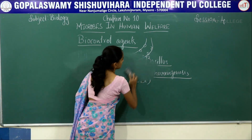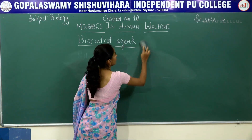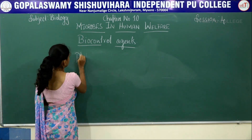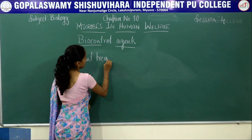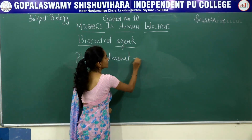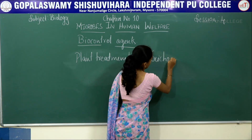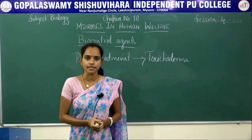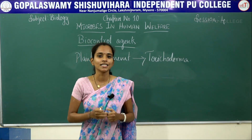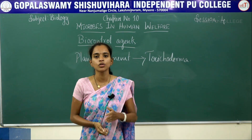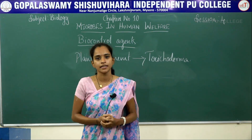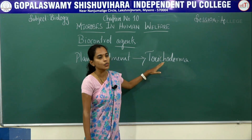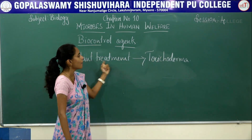The second biocontrol agent is used for plant treatment, that is Trichoderma. Trichoderma is a free-living organism which is incorporated into the root nodule. It does not allow any plant pathogen to develop inside the plant, because the presence of Trichoderma destroys the root-borne pathogens which damage the plant. That is why it is used in plant treatment.